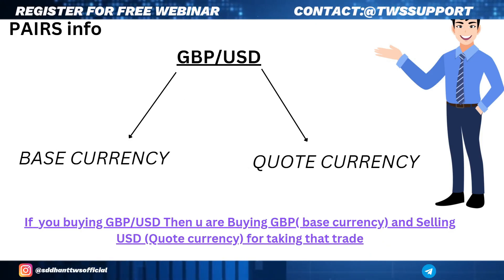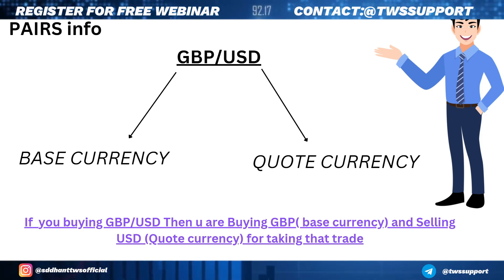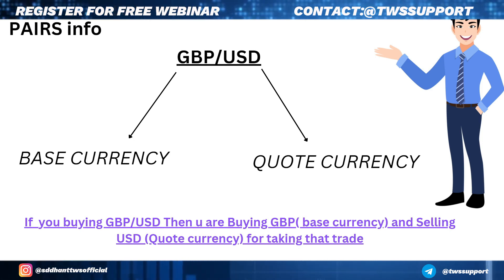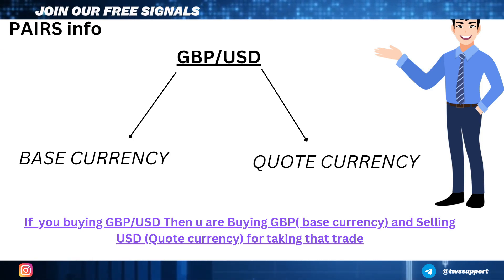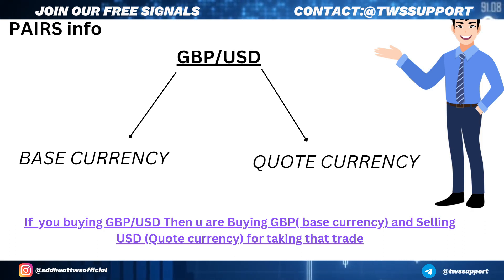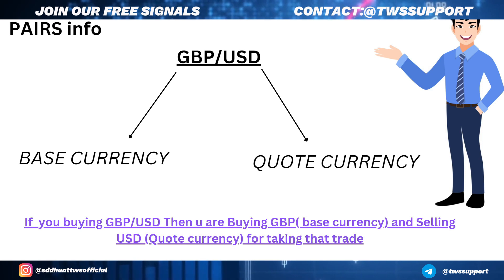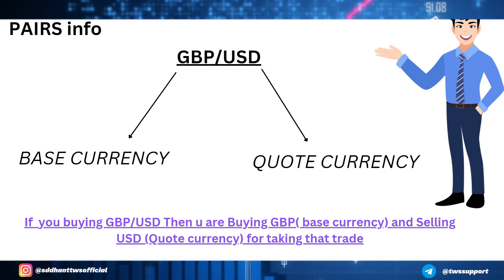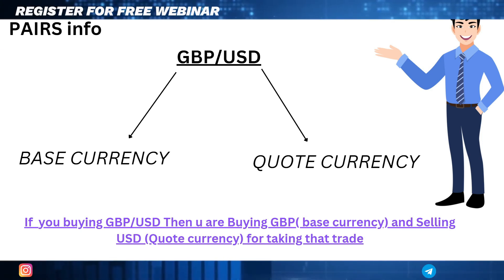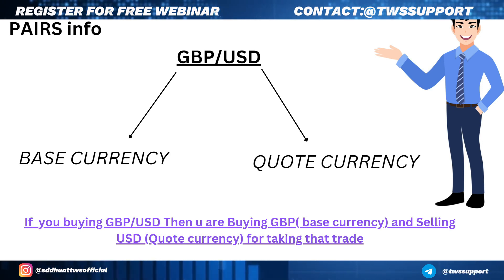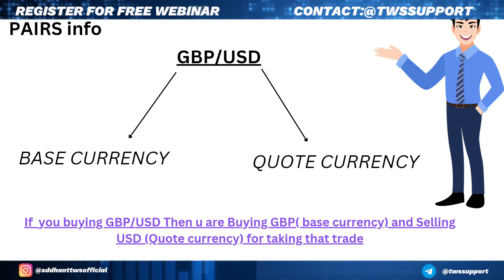Let's talk about the pairs. In GBP/USD, GBP is the first and USD is the last. There is a base currency and a quote currency. The base currency is GBP and the quote currency is USD. If you are buying GBP, then you will be selling the USD. If you buy USD, then you are buying the GBP. It is that simple.